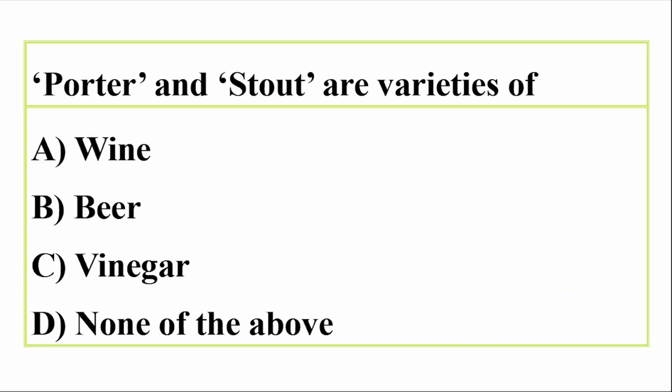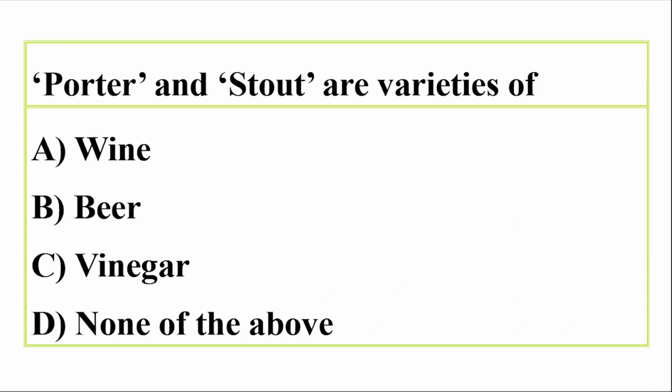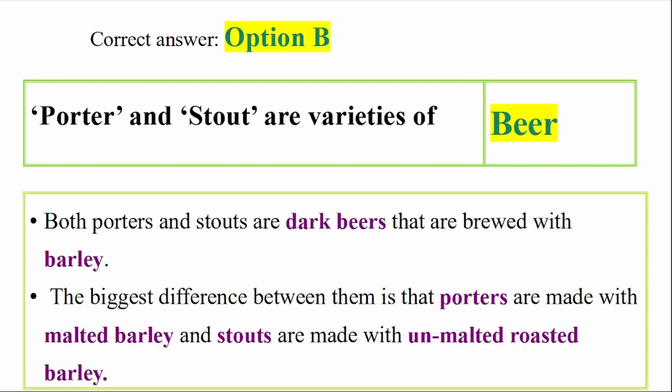Question: Porter and stout are varieties of which of the following? Options: wine, beer, vinegar, or none of the above. Correct answer: option B, beer. Porter and stout are varieties of beer. Both porter and stout are dark beers that are brewed with barley.